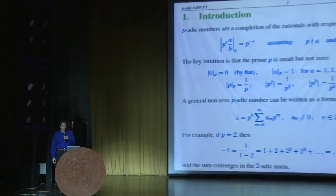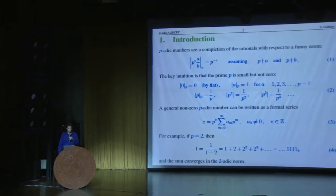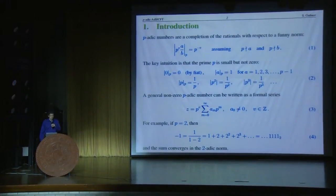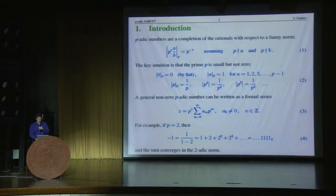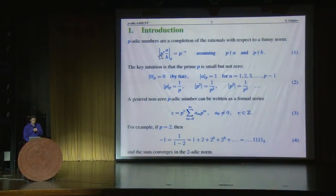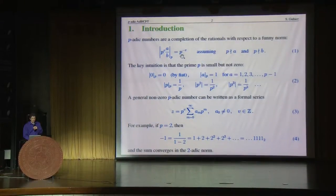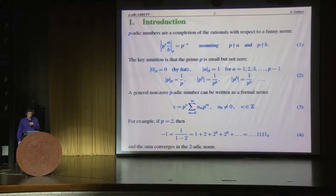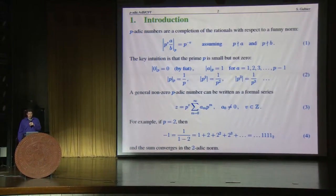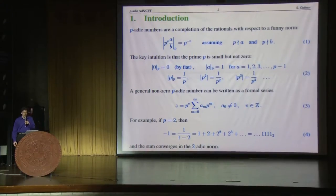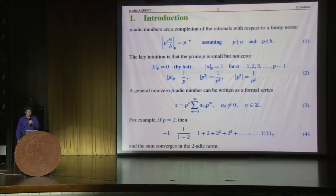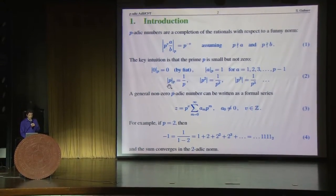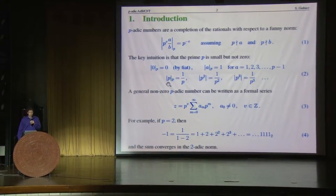P-adic numbers are a completion of the rationals with respect to a funny norm. Equation 1 shows that norm. It's funny because you would think that on the right-hand side you would have at least the prime number P to the power of positive B, but it's not that way. P is a small number in the p-adic norm, and that's what makes everything work. For instance, the p-adic norm of P itself is 1 over P.